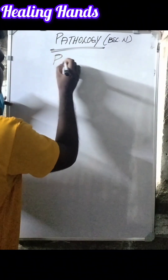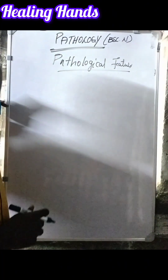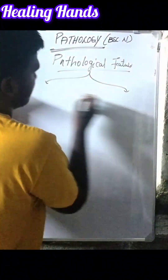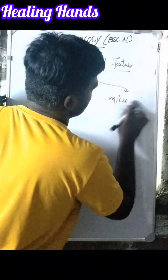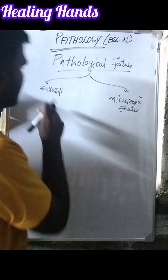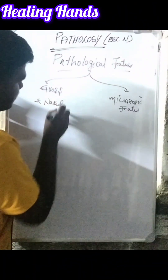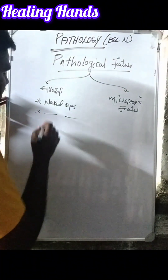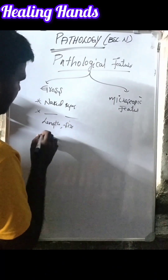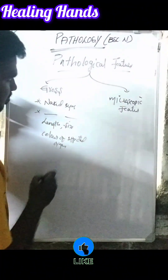After clinical manifestation, we should write the pathological features. In pathological features there are two features: gross features and microscopic features. In gross features, we write what we can see with our naked eyes — how the tumor looks, including the size and color of the affected organ or body part.